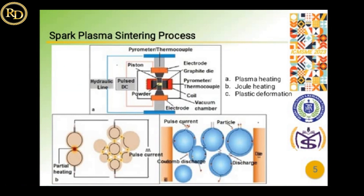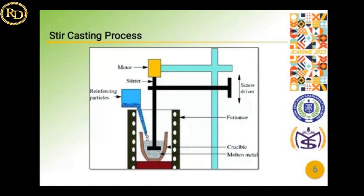Then comes the spark plasma sintering process. Here is a three-pictorial view of the spark plasma sintering process. The first is plasma heating, where a magnetic coil is used with a pulsed DC that provides heating to the powder, causing joule heating, which causes atomization of the grain structure. Due to the heating, plastic deformation occurs and we obtain a suitable structure of the composite.